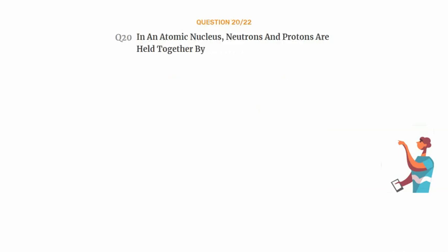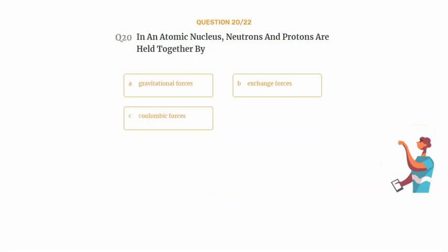Question number 20. In an atomic nucleus, neutrons and protons are held together by. Option A: Gravitational forces. Option B: Exchange forces. Option C: Coulombic forces. Option D: Magnetic forces.